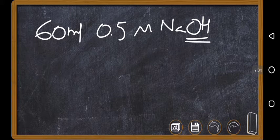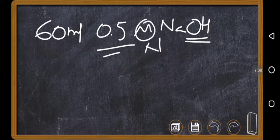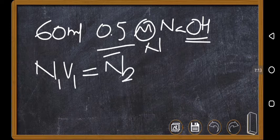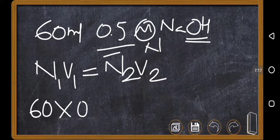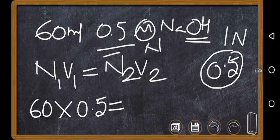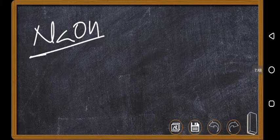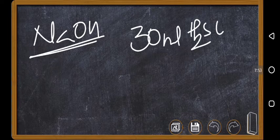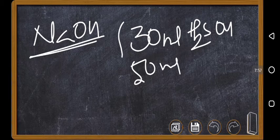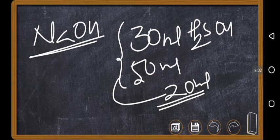NaOH is a monoacidic base, so its molarity and normality are the same: normality of NaOH = 0.5. Using n₁V₁ = n₂V₂: 60 × 0.5 = N₂ × V₂. H₂SO₄ is a dibasic acid, so its normality is 1 (since molarity is 0.5). Therefore V₂ = 30 ml of H₂SO₄ was used to neutralize NaOH. Since the total H₂SO₄ taken was 50 ml, the volume used for ammonia = 50 − 30 = 20 ml.